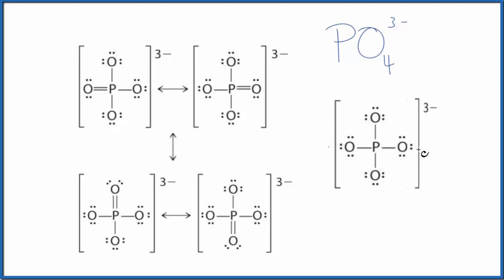If you calculate the formal charges you'll see that this probably isn't the best Lewis structure. So let's write the formal charges for all of these resonance structures and then see which one's the most favorable.